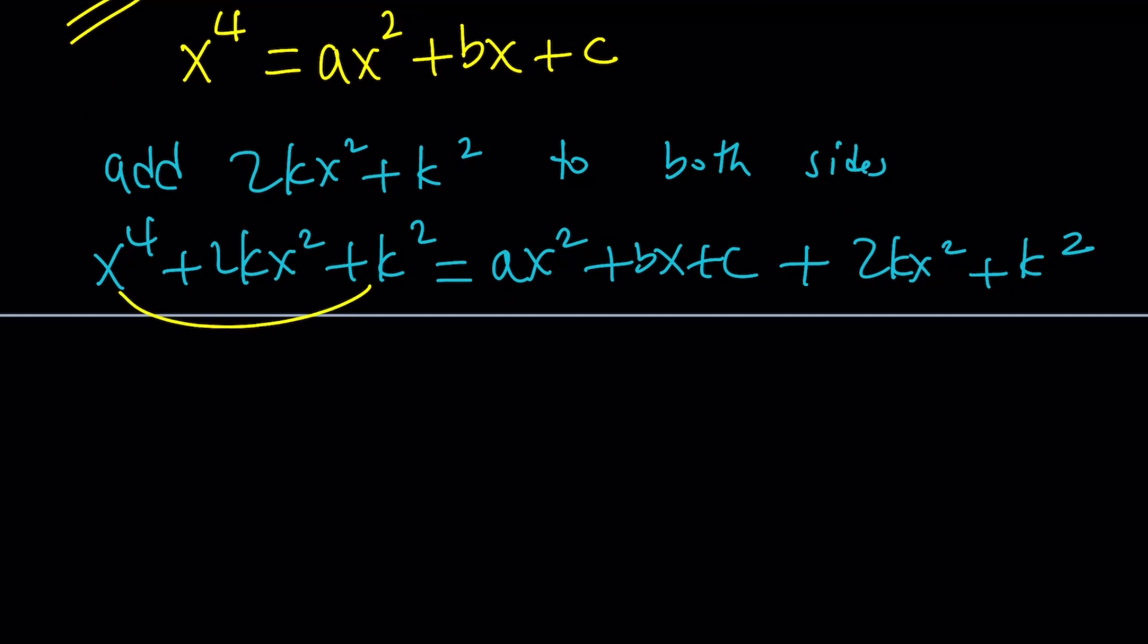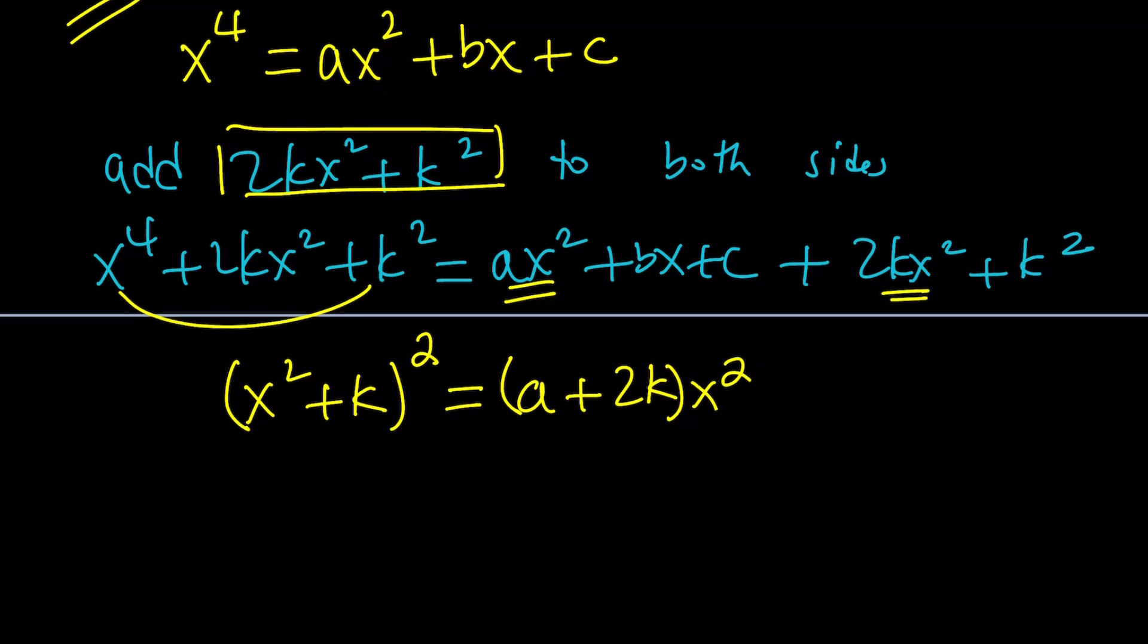So far, so good. Now, the left-hand side becomes a perfect square. That's why we're adding these two terms. So this becomes x squared plus k to the second power. But what's really critical about completing the square here is that we want to get a perfect square on the left-hand side, but we don't want to have any x terms or any x cubed terms. We only want the x to the fourth and x squared. And there's a good reason behind that. So on the right-hand side, we have like terms. Let's go ahead and add those together. a plus 2k is going to be the coefficient of x squared. We have bx, and then c and k squared are both constants.